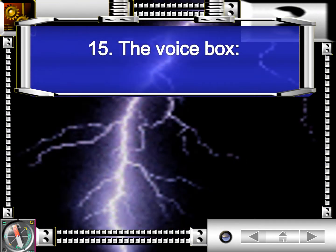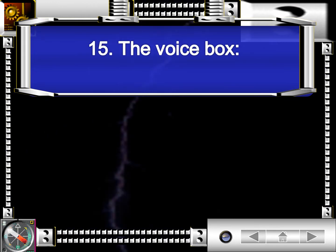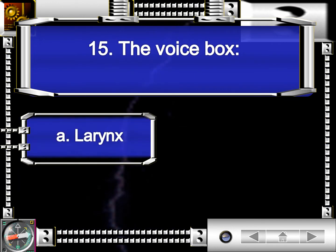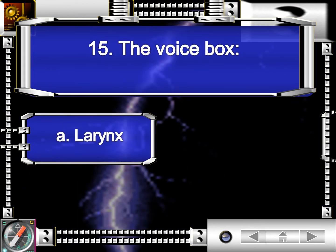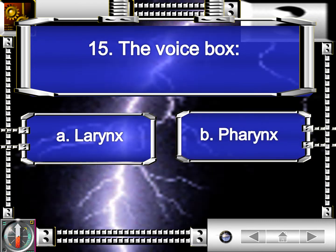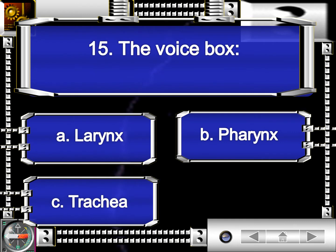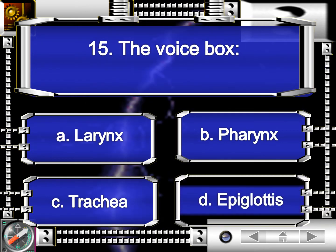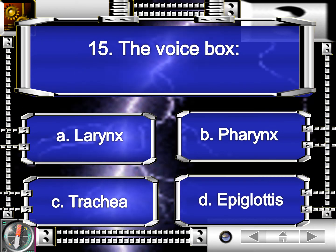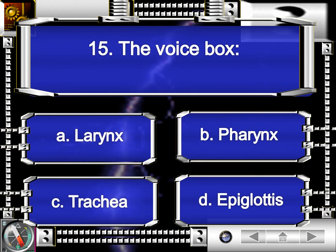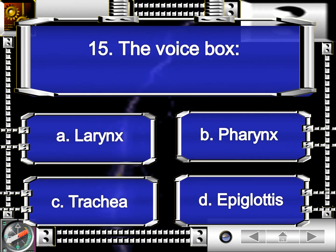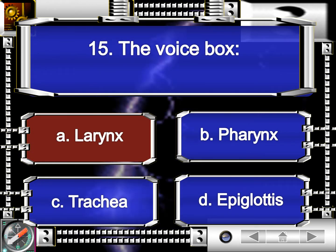Number 15. The voice box is letter A, larynx. Letter B, pharynx. Letter C, trachea. Or letter D, epiglottis. The correct answer is letter A, larynx.